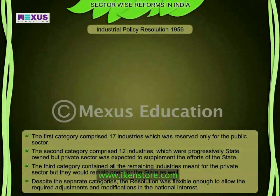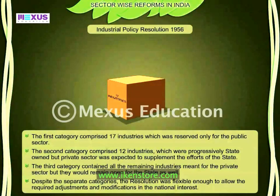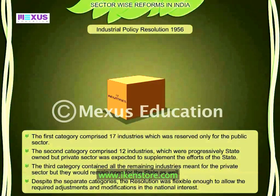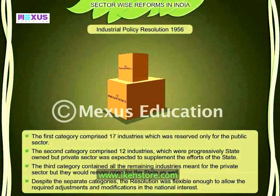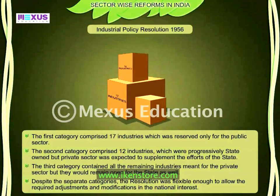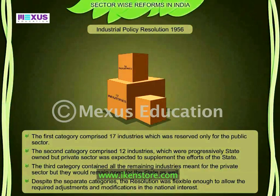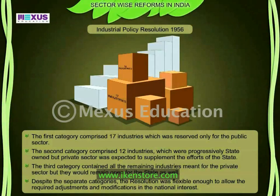The Industrial Policy Resolution 1956 classified industries into three categories. The first category comprised 17 industries reserved only for the public sector, including railways, air transport, arms and ammunition, iron and steel, and atomic energy. The second category comprised 12 industries envisaged to be progressively state-owned, but the private sector was expected to supplement the efforts of the state. The third category contained all remaining industries, where the private sector would initiate development but they would remain open for the state as well. Despite this demarcation, the resolution was flexible enough to allow required adjustments and modifications in the national interest.